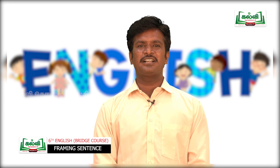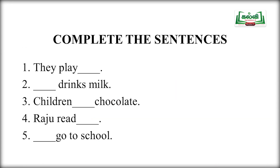Look at the screen and complete the sentences. First: They play — They play cricket, or they play football. Second: Das drinks milk — Cat drinks milk. Third: Children dash chocolate — Children like chocolate. Fourth: Raju read — Raju reads newspaper. Fifth: Das go to school — I go to school. Very good students, you completed all the sentences.